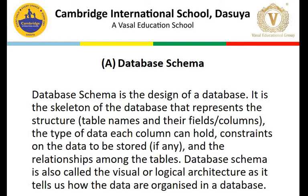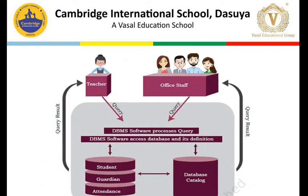Now, the database schema - what is this? It is basically a structure. The very first step is to create the structure, like for a building. Here we took the example of a school, and we discussed that teachers and different stakeholders of the school - like office staff and students - all use the student database for attendance, marks, updating guardian information, student information, fees, and so on.